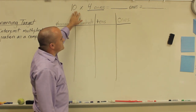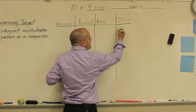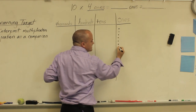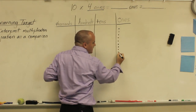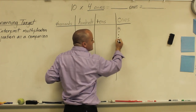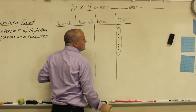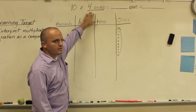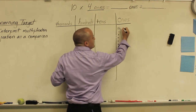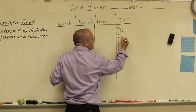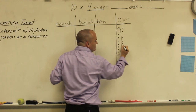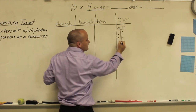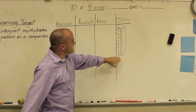We need to have ten first — one, two, three, four, five, six, seven, eight, nine, ten. That's going to be my first group of ten ones. And I need four total, four groups of ten ones, so I'm going to have four of these all together. So I'm going to do another group of ten ones. That's going to be my second group of ten ones.